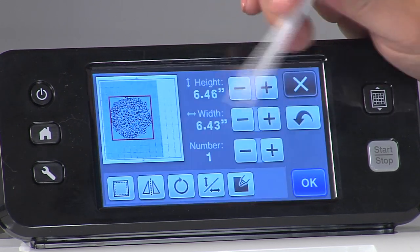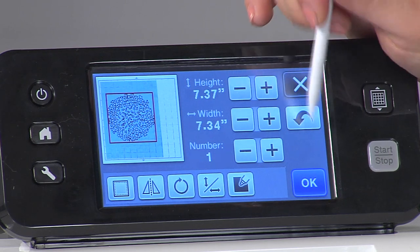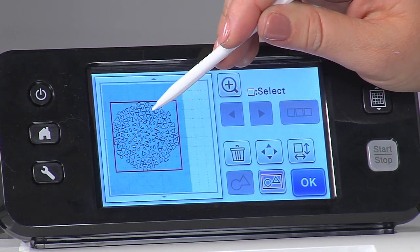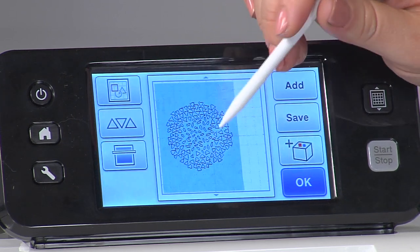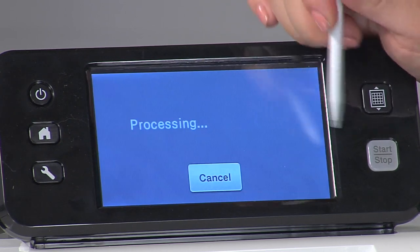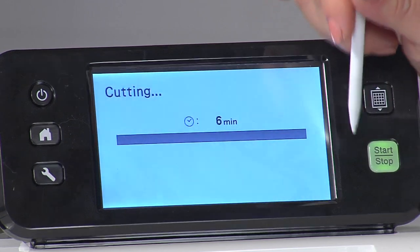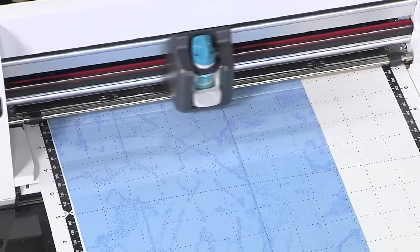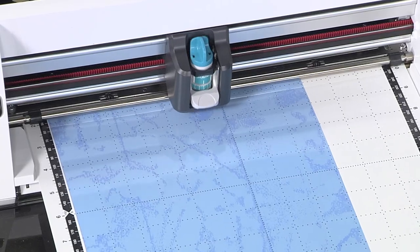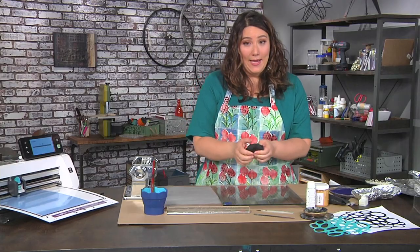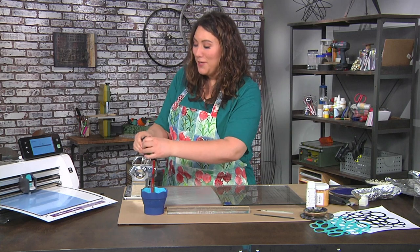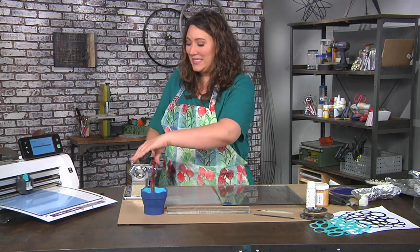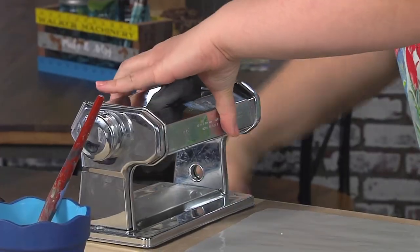So I'm just going to go ahead and do that, make it a little bit bigger, I love that. And now we're going to say okay and cut and start. Now it says that's going to take six minutes so while it's cutting I'm going to show you the next step. So I have some polymer clay, I have a pasta machine. Now this is a pasta machine that I'm not making pasta with, it's dedicated to polymer clay.